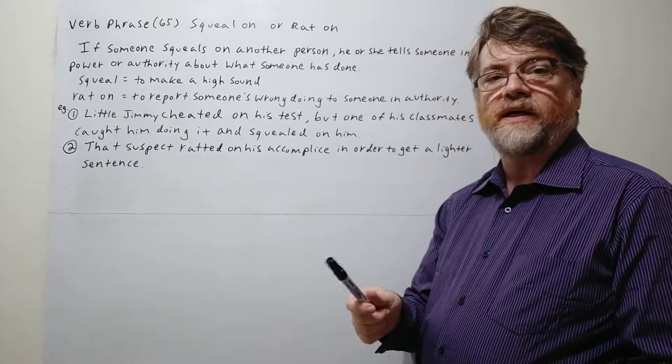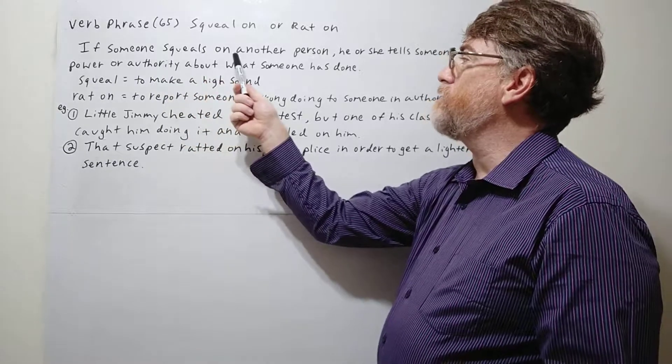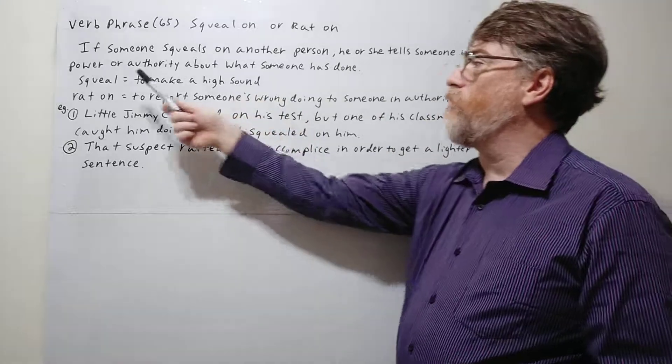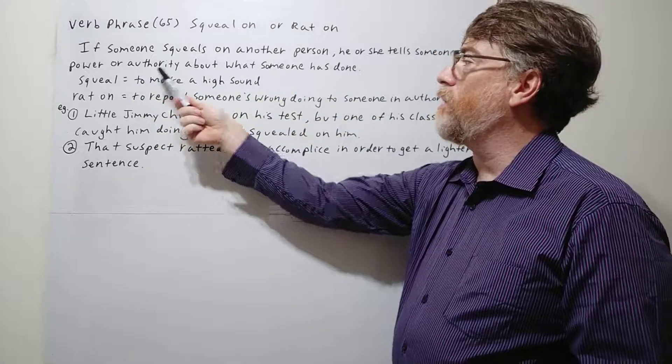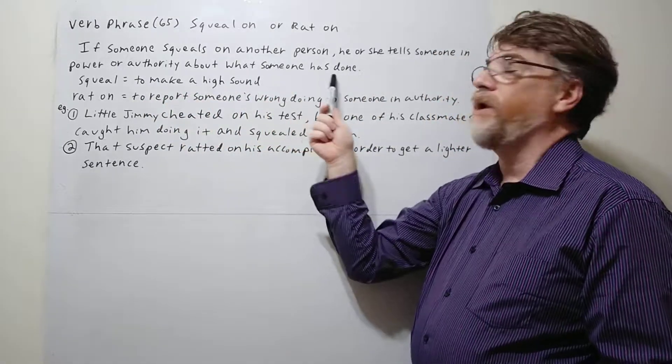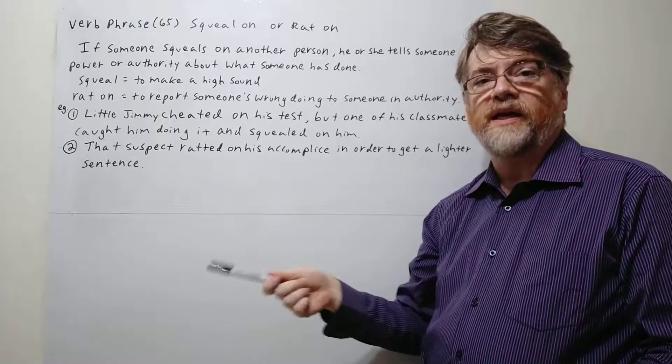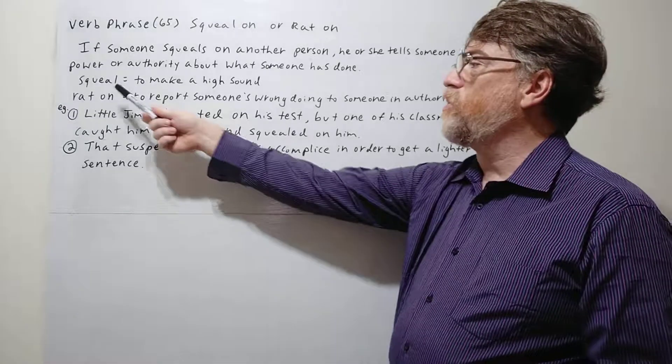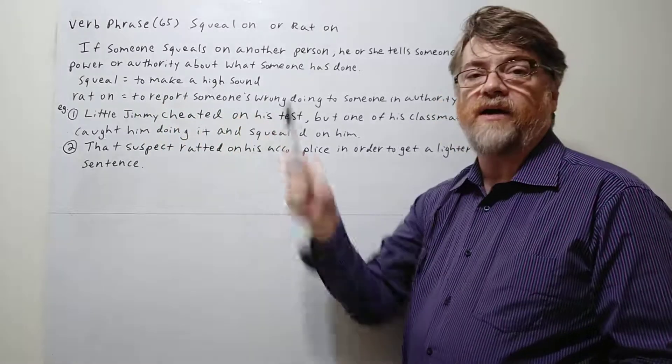Let's look at the note first. If someone squeals on another person, he or she tells someone in power or authority about what someone has done. So it's like telling on someone when somebody did something wrong. You're squealing on them. Now squeal itself means to make a high sound.